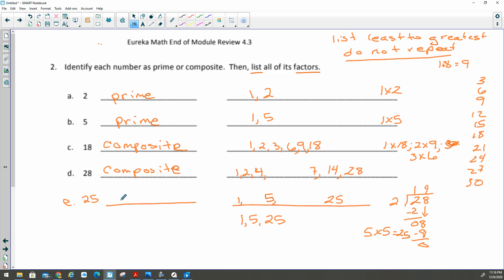Since we have more than 2 factors, this number is not prime. This number is composite. So prime, you might write something to help you like 1, 2. And then composite, you can write something like 1, 5, 25 to show you more than 2.